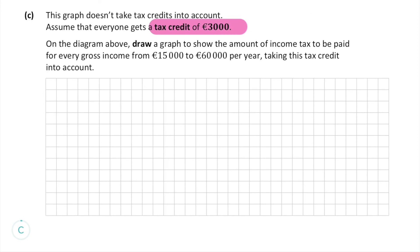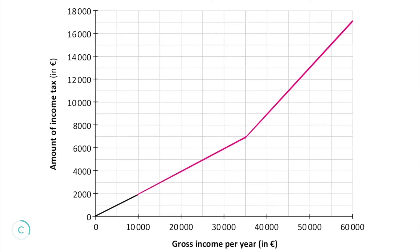In part C, we're told that the graph doesn't take tax credits into account and that everybody is eligible for a tax credit of €3,000. So we have to draw another graph taking tax credit into account on top of the other graph we've already drawn. To do this, we can take every point on our graph and decrease the amount of income tax by €3,000.